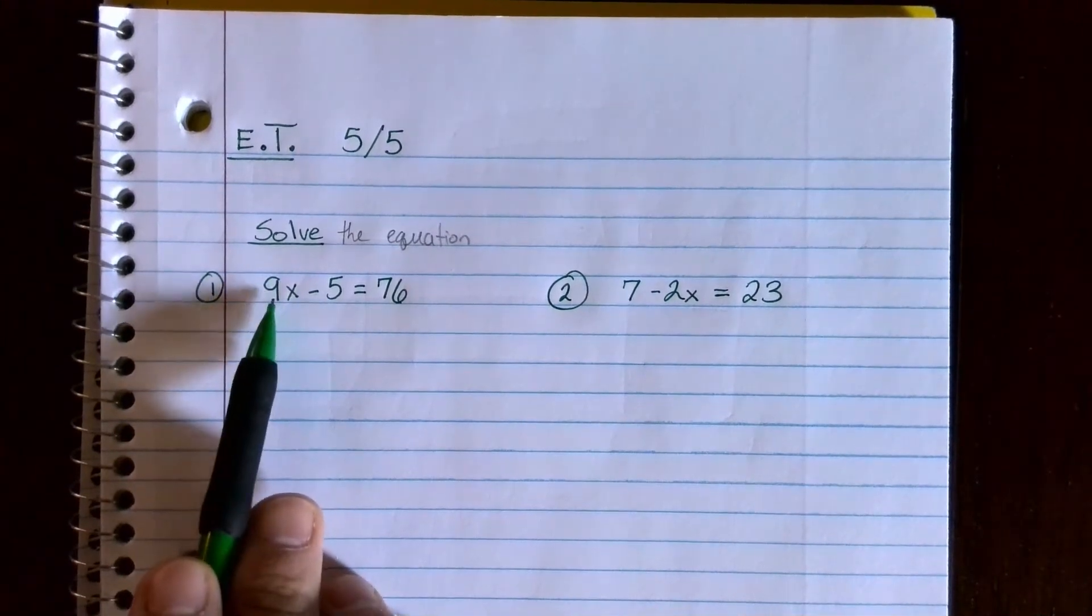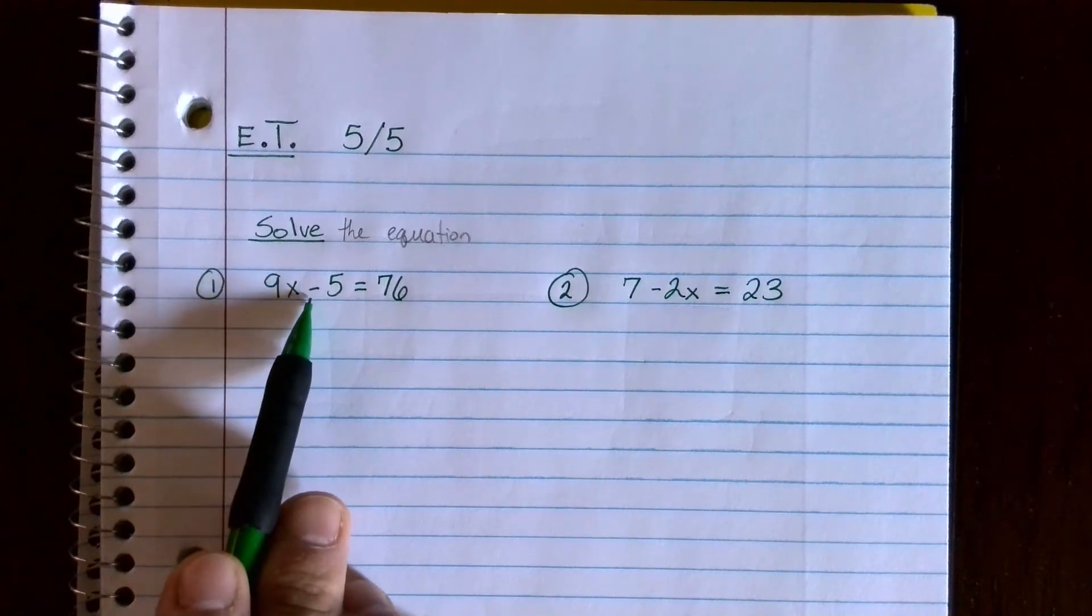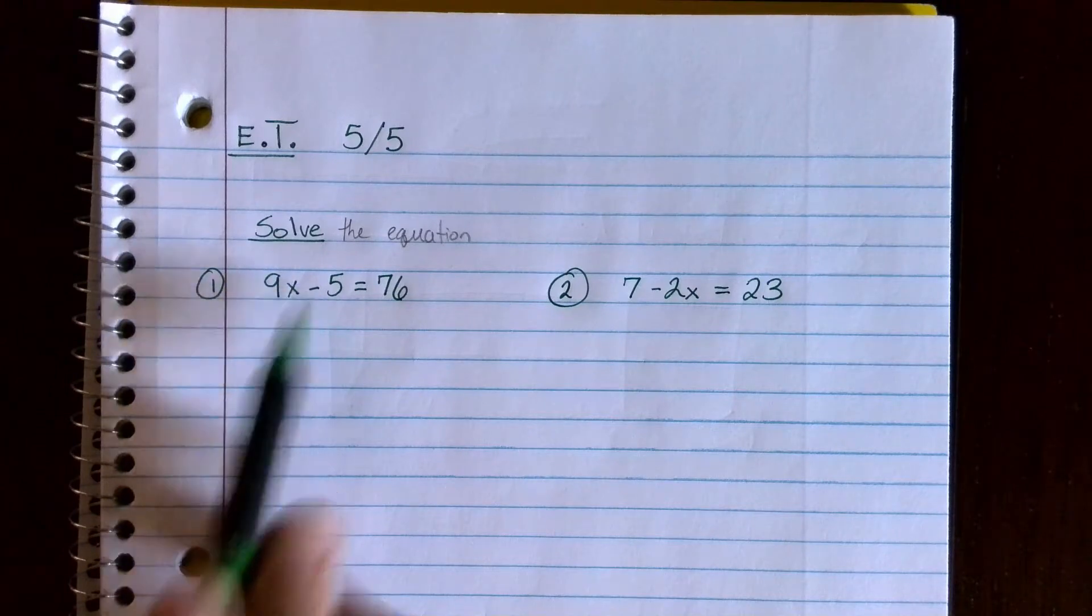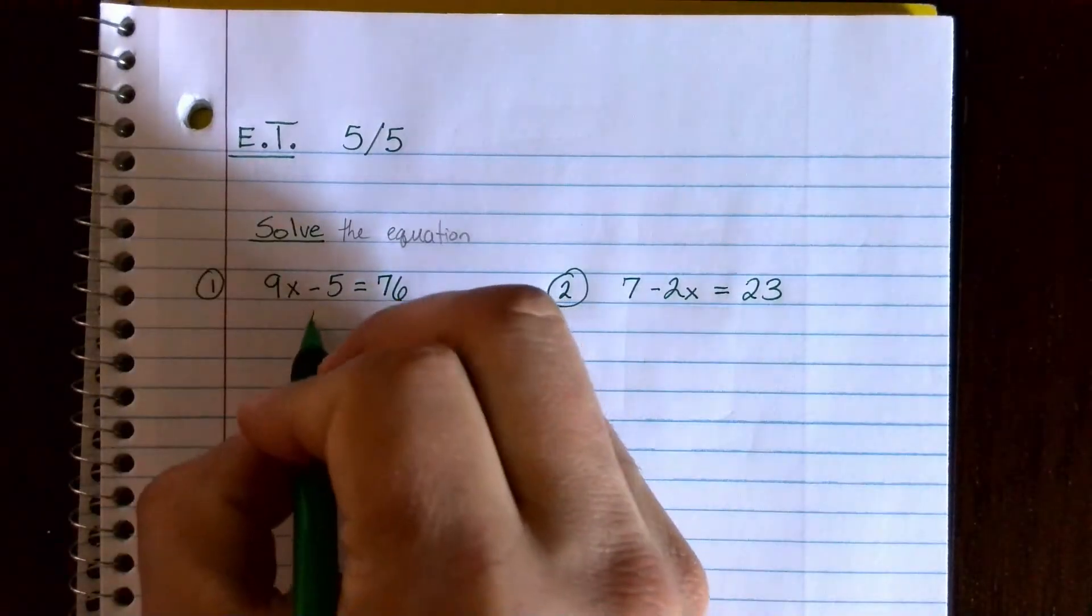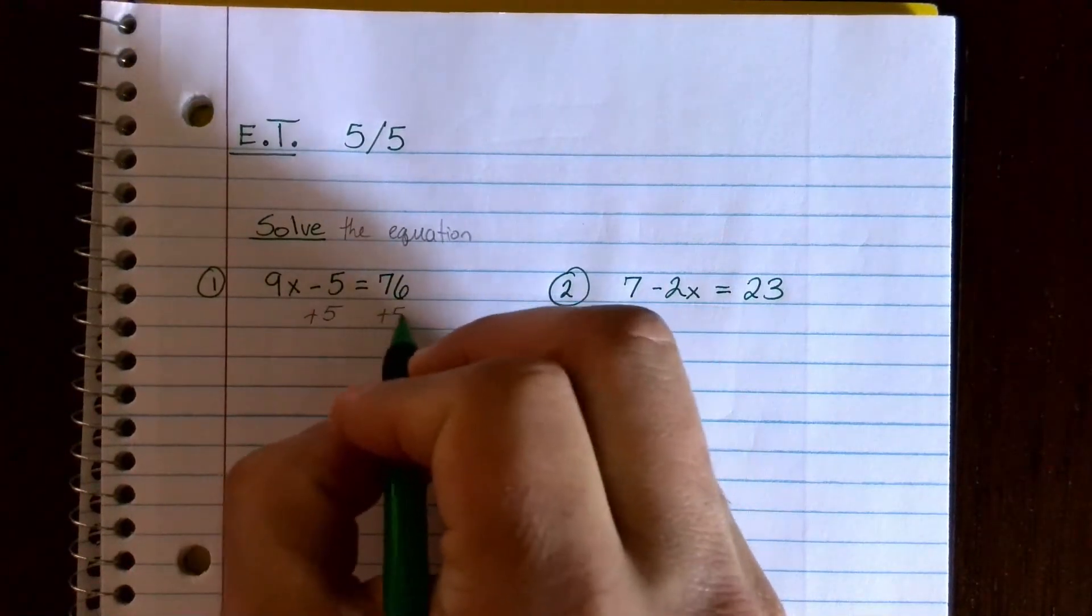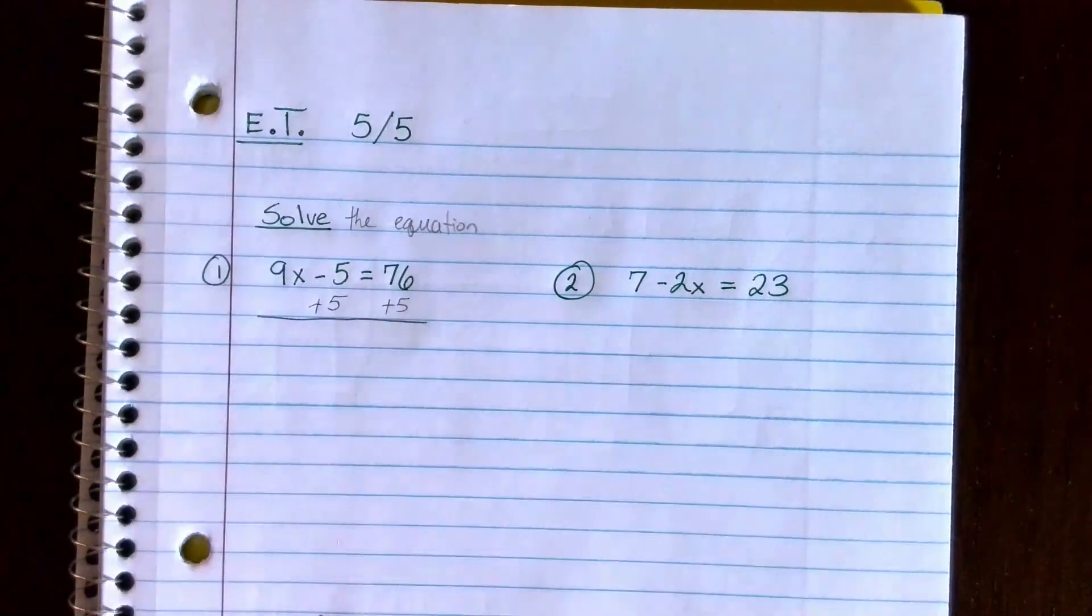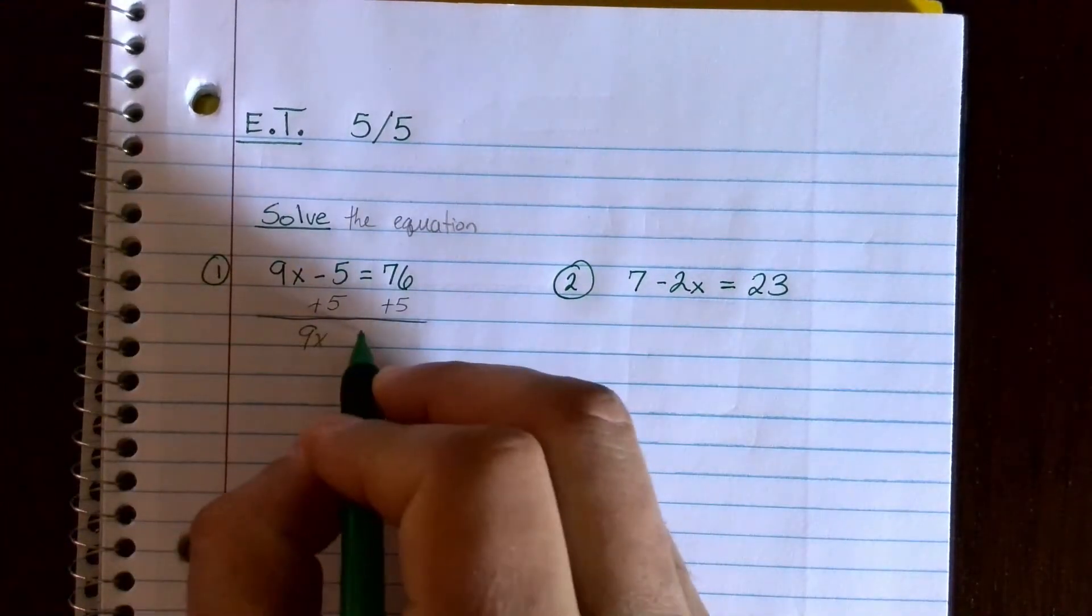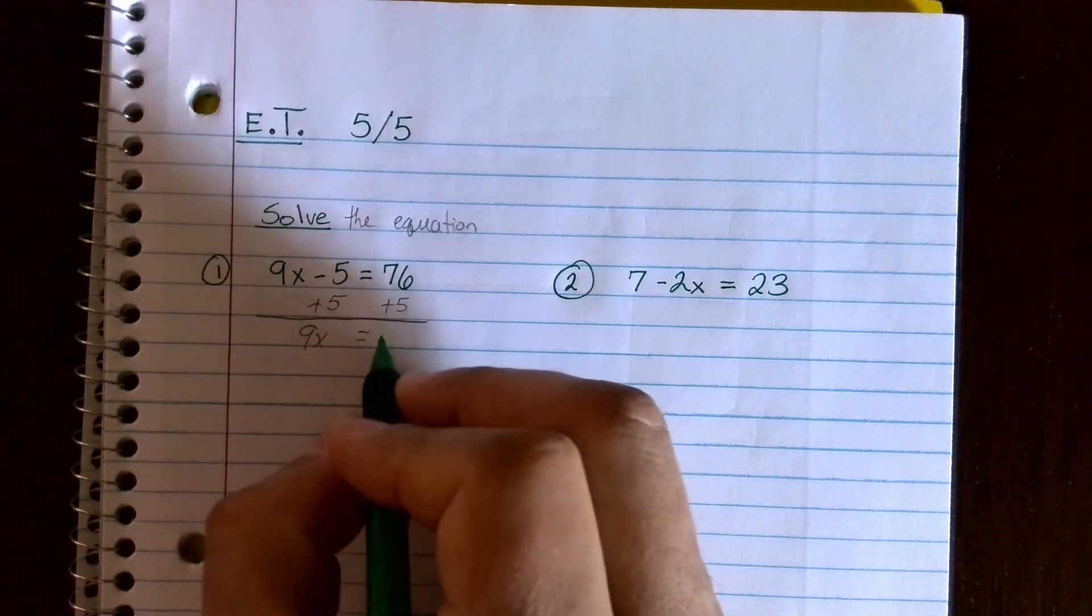Okay, so this one over here you have two terms, a 9x and a negative 5. We always get rid of the constant term first, in other words the term that does not have the x in it. So this minus 5 I'm going to get rid of. If I add 5 that goes away, you're left with nothing like a plus 0. So I add 5 to both sides, that's my first algebra step. I get 9x plus 0, I don't have to write the plus 0. 76 plus 5 is 81.